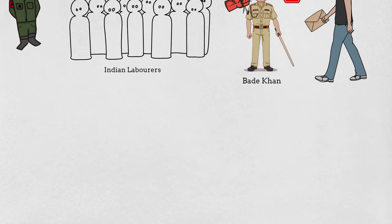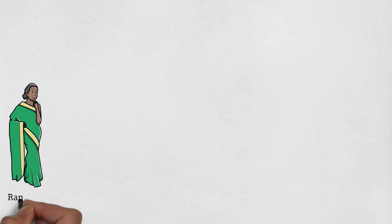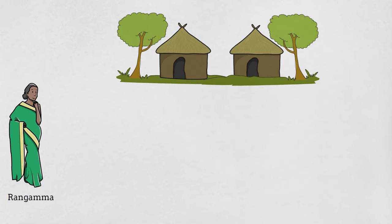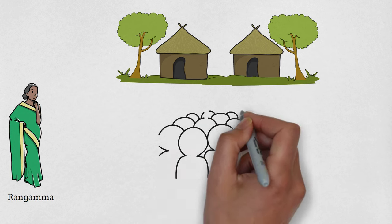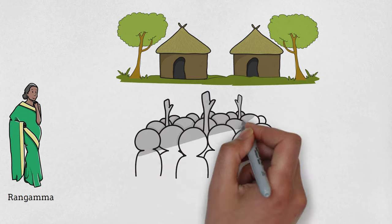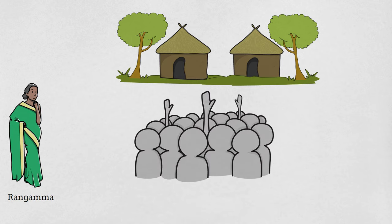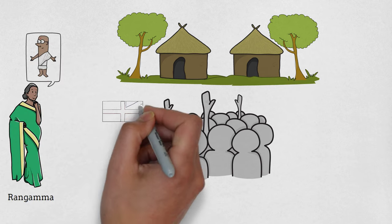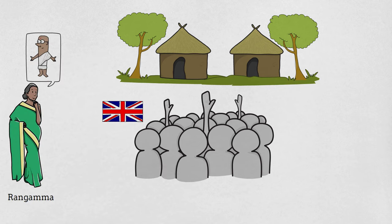Meanwhile, Rangamma — the widow who encouraged Moorthy after his mother's death — is also active politically. She inspires the women of Kanthapura and gathers them all to follow the Gandhian way of life, Gandhian teachings, and revolt against the Britishers. The whole village starts following Gandhian non-violence and protesting against the Britishers.